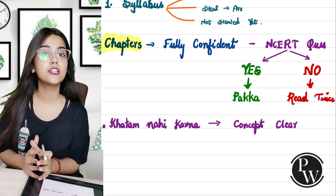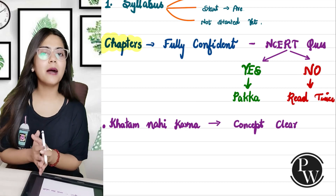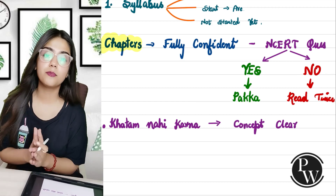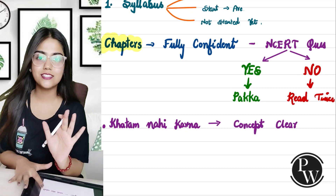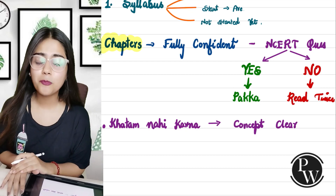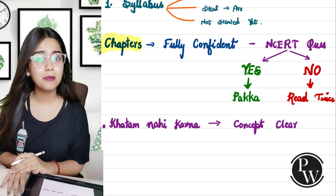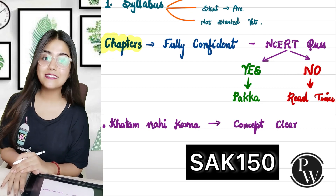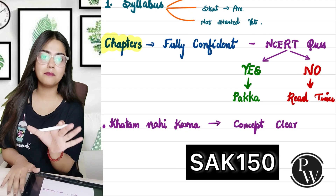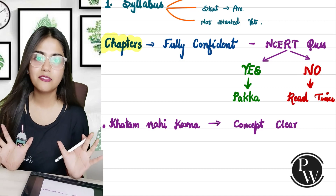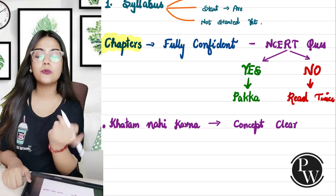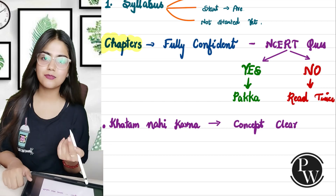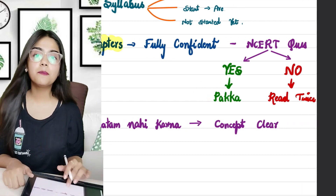You can access this through the link in the description box. If you want a discount, use the code provided — it's for my Dreams Learning family, which means it's for you. Use the code to get a discount, check the description box, and make sure to follow the timetable to complete your syllabus in 4 months.